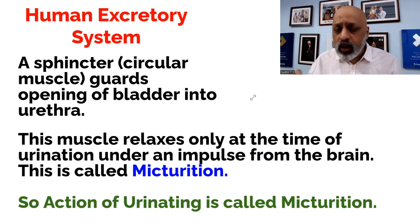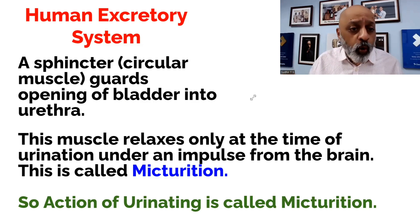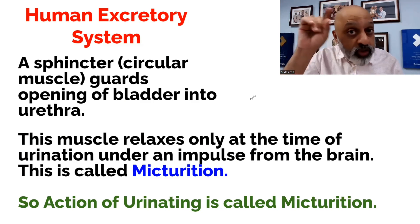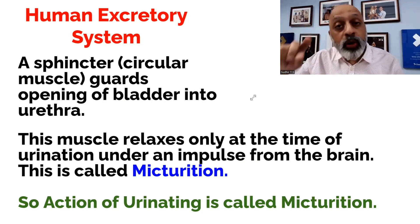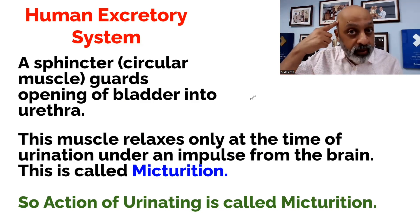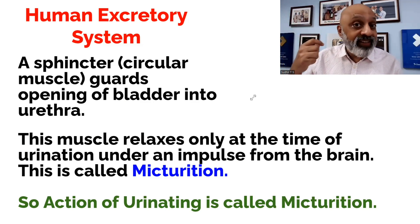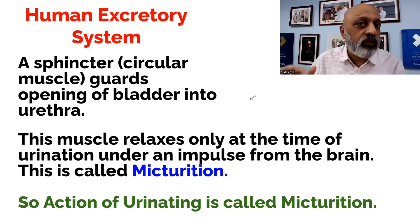Another important part is the sphincter — the circular muscle guarding the opening of the bladder into the urethra. The process of urinating is called micturition. During micturition, the sphincter muscle relaxes only at the time of urination under an impulse from the brain, which is part of the nervous system. So micturition is essentially the action of urination.